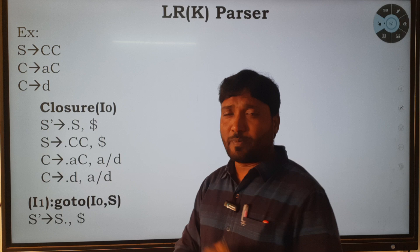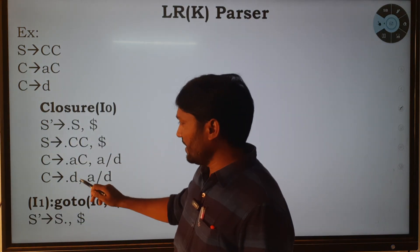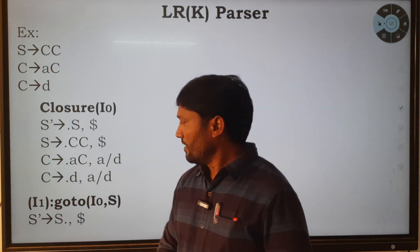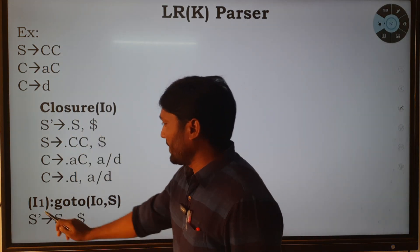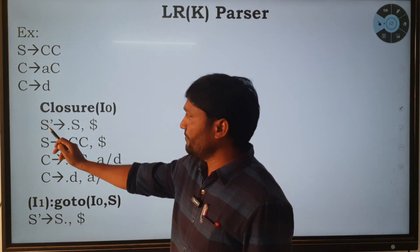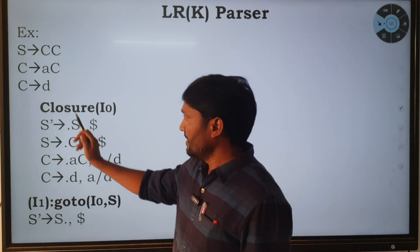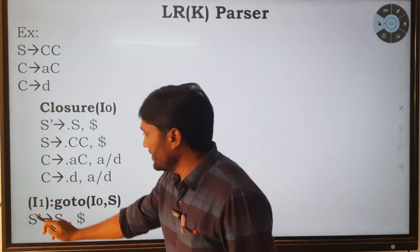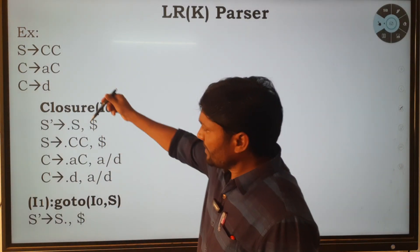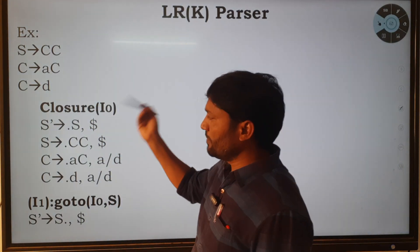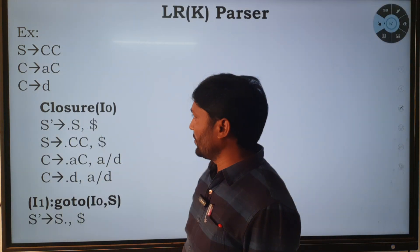Now apply the goto function for S, C, a, and d. Applying goto(i0, S): if we look at S' → •S with dollar, after the dot there is S. Shifting the dot gives S' → S• with dollar. There is no symbol after the dot, so we leave it. i1 is done.